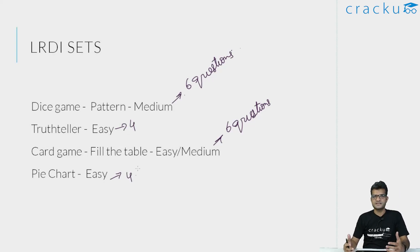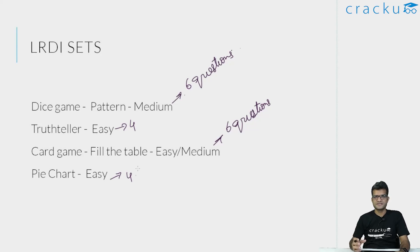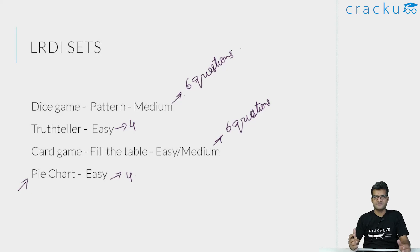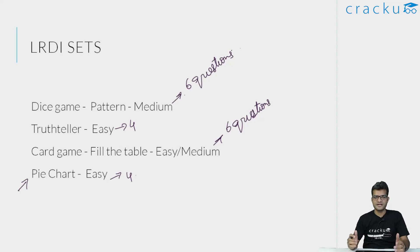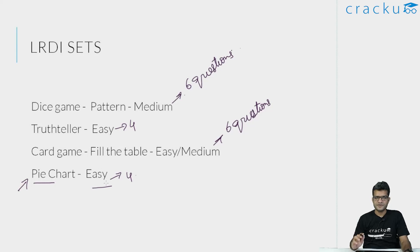Normally when the LRDI section starts I spend the first one minute going through each of the four sets — around 15 to 20 seconds per set to get an understanding of what each set is about. Even in this mock I did the same. I looked at all four sets and immediately figured out that the first set I would attempt is the pie chart one. My strategy in LRDI is that in the first seven to eight minutes I should get one four-question set correct. Once I get a four-question set correct there is a lot less pressure on me. So I attempted the pie chart question, feeling confident I'd get it if I spent enough time.